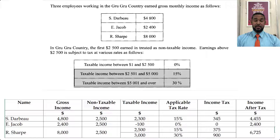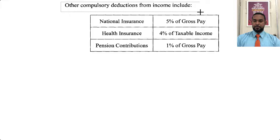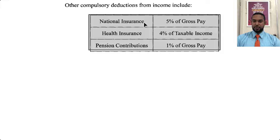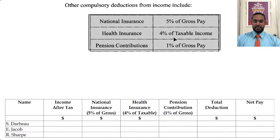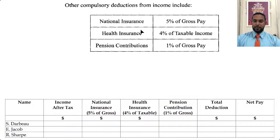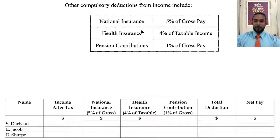There's a second part of the question. Other compulsory deductions from income include: national insurance at 5% of gross pay, health insurance at 4% of taxable income, and pension contributions at 1% of gross pay. I'm going to work through this two ways as well — first using the initial interpretation, then using my interpretation.